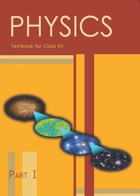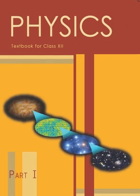Coulomb's Law is a fundamental law in electrostatics that tells us how strong the force is between two point charges — an idealized model where all the charge is concentrated at a single point. There are two main factors: the amount of charge on each object, and the distance between them. The more charge, the stronger the force. And the closer two charges are, the stronger the force — in fact, the force is proportional to the inverse square of the distance. If you double the distance between two charges, the force decreases by a factor of four.